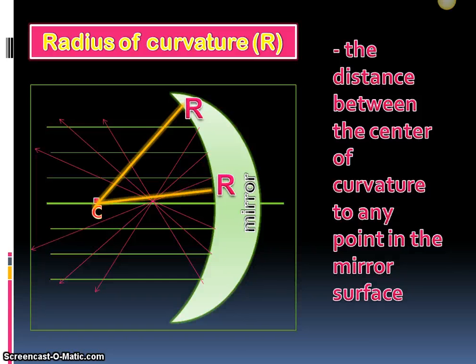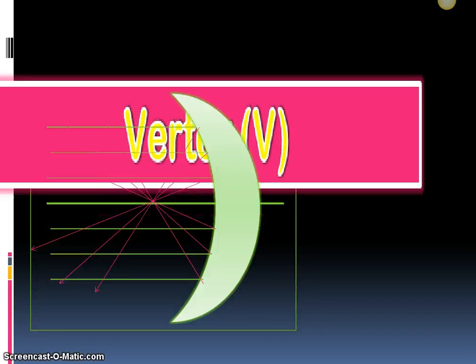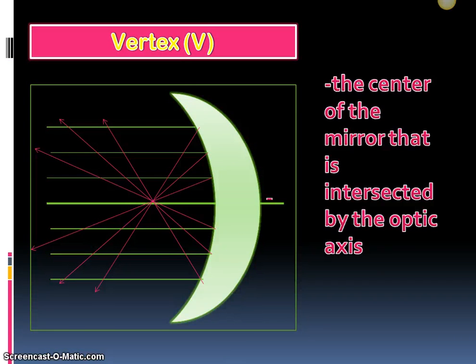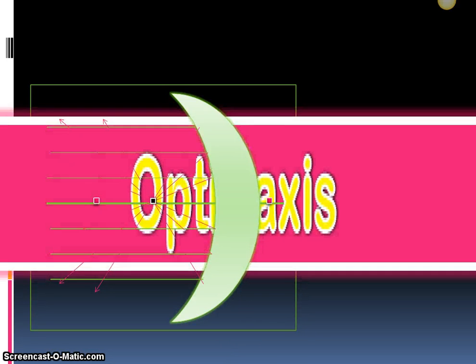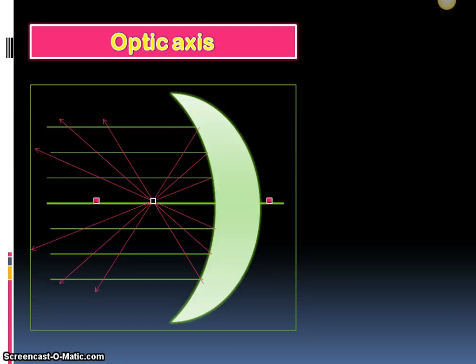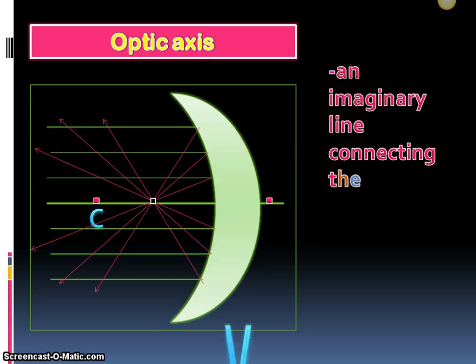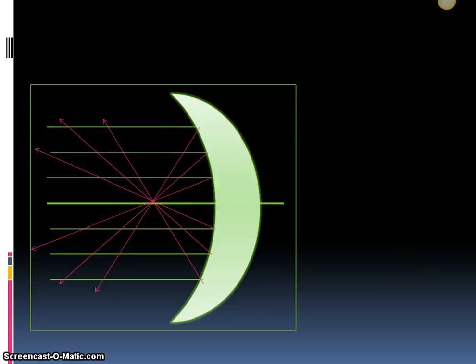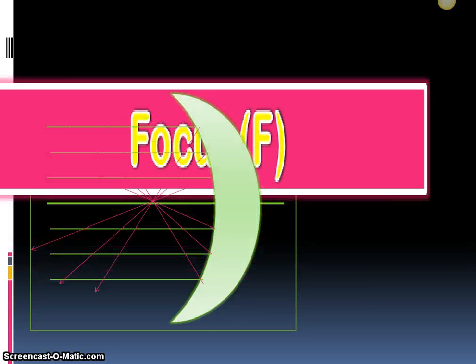Vertex: it is the center of the mirror that is intersected by the optic axis. Optic axis: it is the imaginary line connecting the center of curvature and the vertex. Focus: